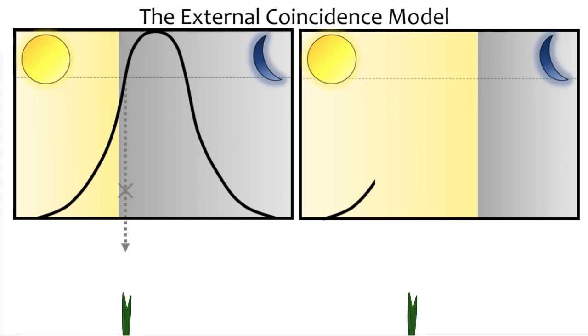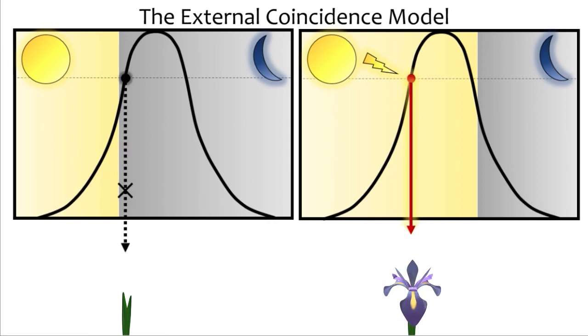But as the seasons go by, the day length increases, until both the peak of accumulation and the daylight coincide. At a specific time of the year, the flowering molecule is not only abundant but also activated by light. The coincidence is achieved, and therefore flowering is triggered.